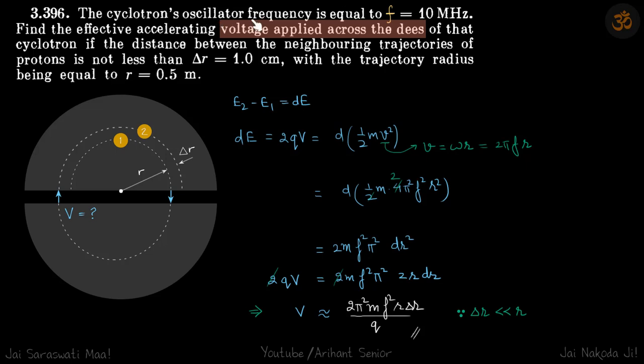We are given the oscillator frequency of the cyclotron. We need to find the voltage applied across the dees if the distance between the neighboring trajectories is Δr when the trajectory radius is r.